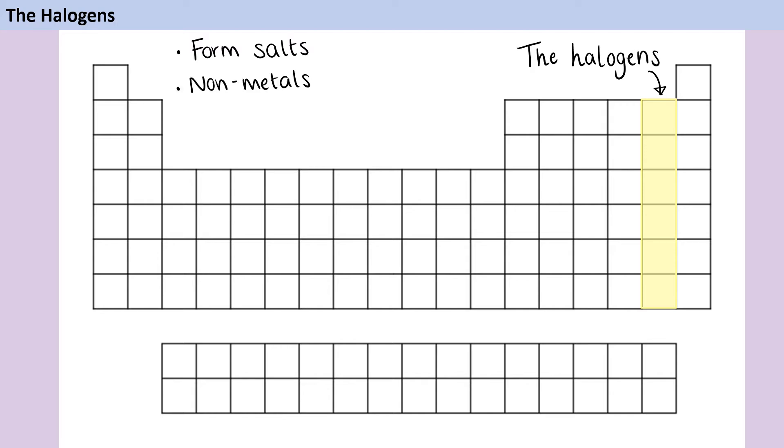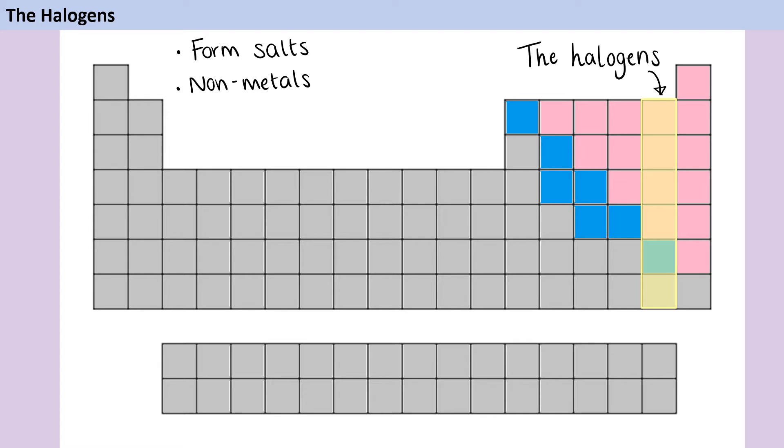Most of the halogens are non-metals, and we can tell this because they're found on the right hand side of the table. Astatine, near the bottom of Group 7, is a metalloid, or semi-metal, which means it acts a little bit like a metal and a little bit like a non-metal.